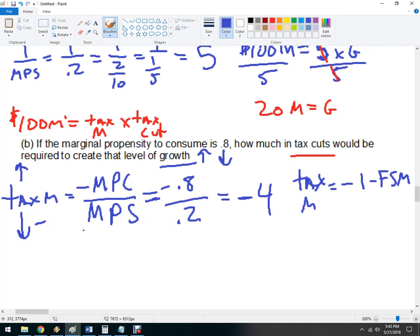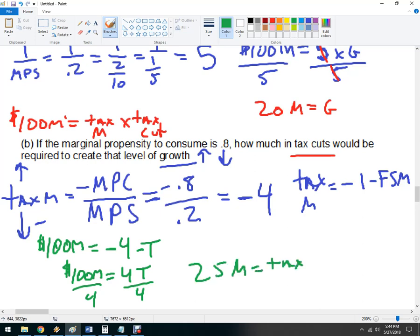So to answer the question, we've got, we want to get $100 million. We've got this tax multiplier of negative 4. We want to know how much in T, T for taxes, do we need to cut? And that's going to be negative. So, those both turn into positive. So, we've got 4T, 100 million, and divide by 4, divide by 4. So, we're going to have to get $25 million in tax cuts to equal $100 million in growth.